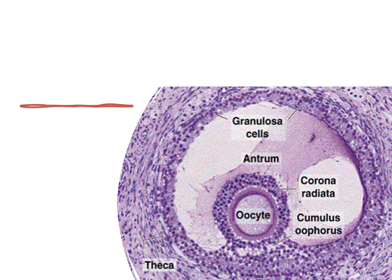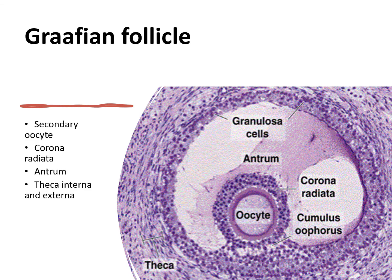What about this one? This is your matured follicle or the Graafian follicle. It consists of a secondary oocyte, the corona radiata surrounding the secondary oocyte, a very large antrum filled with fluid, plus the theca folliculi divided into theca interna and theca externa.